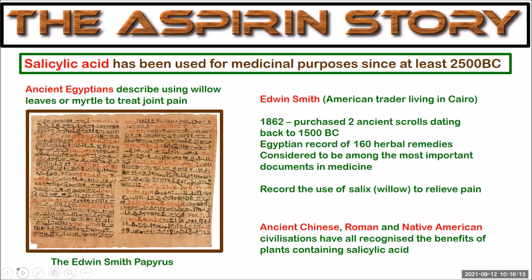Edwin Smith, an American trader living in Cairo in the 1800s, in 1862 purchased two ancient scrolls dated back to 1500 BC. These are known as the Edwin Smith Papyrus and are some of the most important documents in medicine. They record the use of salix, or willow, to relieve pain among other herbal remedies. Ancient Chinese, Roman, and Native American civilizations have all recognized the benefits of plants containing salicylic acid.